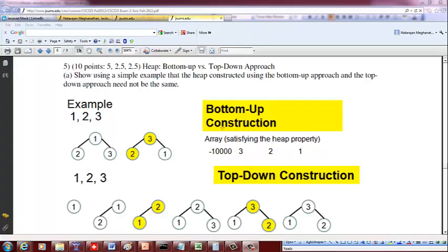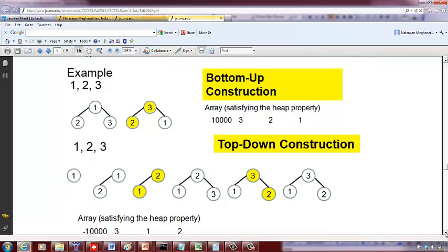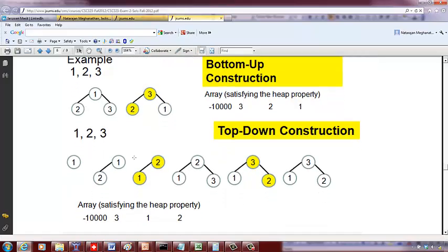Now let's do a top-down construction of this heap. Again, the elements are 1, 2, 3. You start with 1 and then put 2 as a left child. That doesn't satisfy the heap property, so you move 2 up and 1 down.